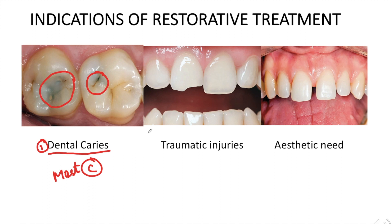Another indication, apart from caries, is traumatic injury, which can involve the hard and soft tissue of the tooth. For example, in this picture you can see a fracture of the tooth that can be corrected by aesthetic restorations.